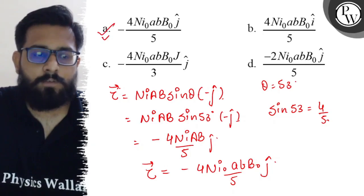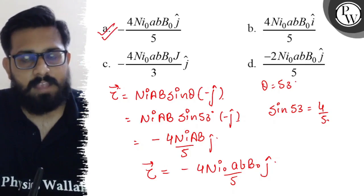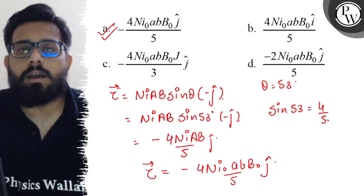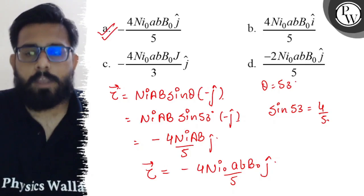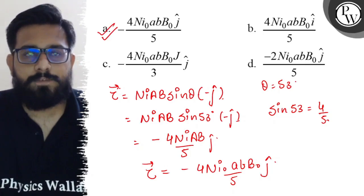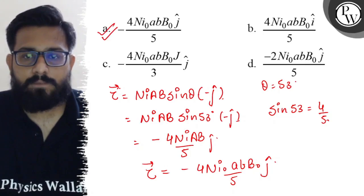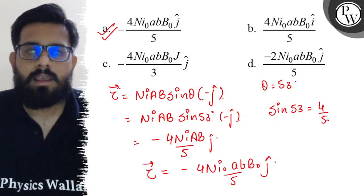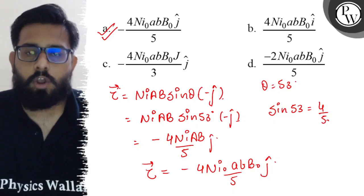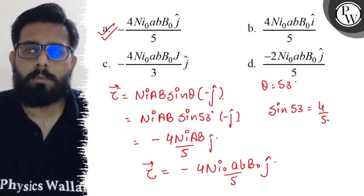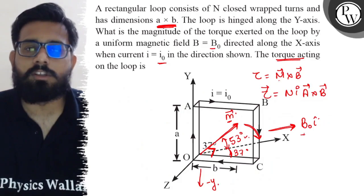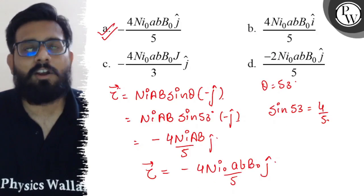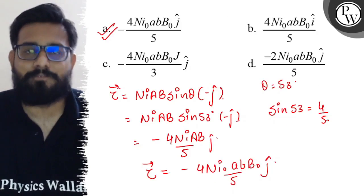This matches our first option, so option A is absolutely correct: minus 4n·i0·a·b·B0 upon 5 j-cap. I hope you got the concept of this question. All the very best!